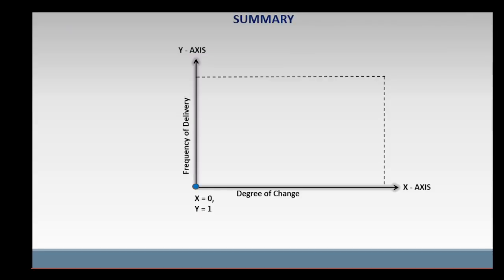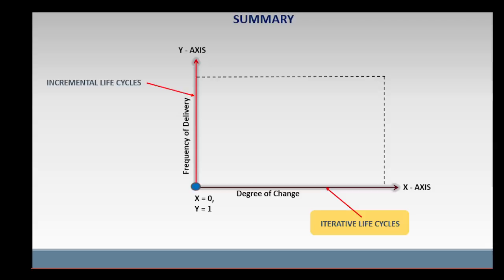In summary, the type of project life cycle depends on the frequency of delivery and the degree of change. As you can see from this graph, the degree of change increases along the X-axis, while the frequency of delivery increases along the Y-axis. At the predictive life cycle point, where the X-axis and the Y-axis intersect, the degree of change is zero and the frequency of delivery is one. For incremental life cycle, which is up along the Y-axis, the degree of change is zero and the frequency of delivery is high with multiple small deliveries. For iterative life cycle, which is to the right along the X-axis, the degree of change is higher and the frequency of delivery is one, or a single delivery.